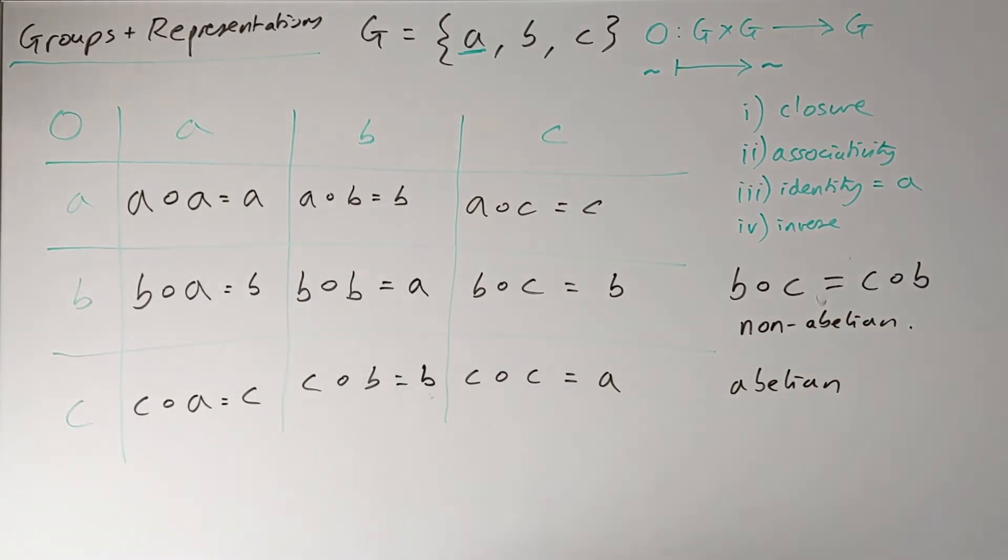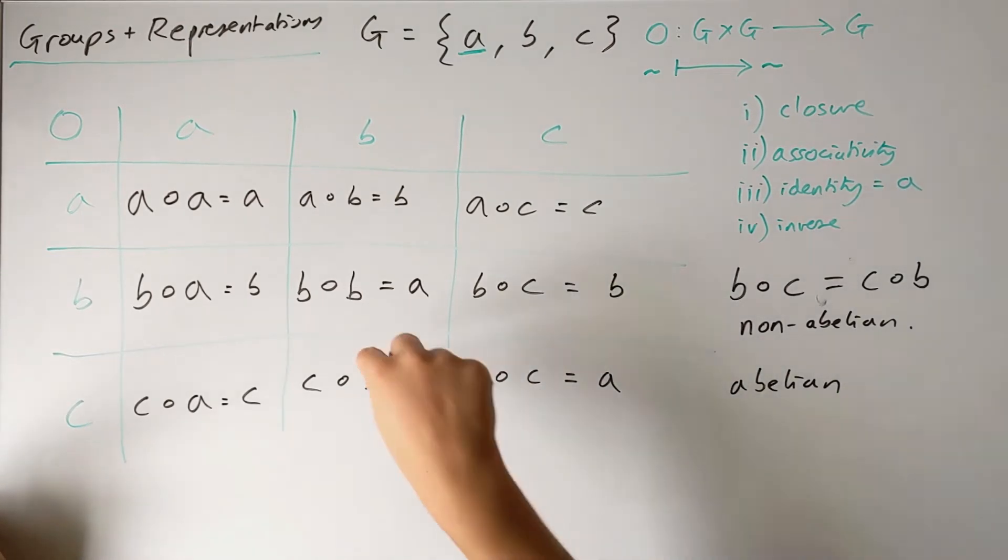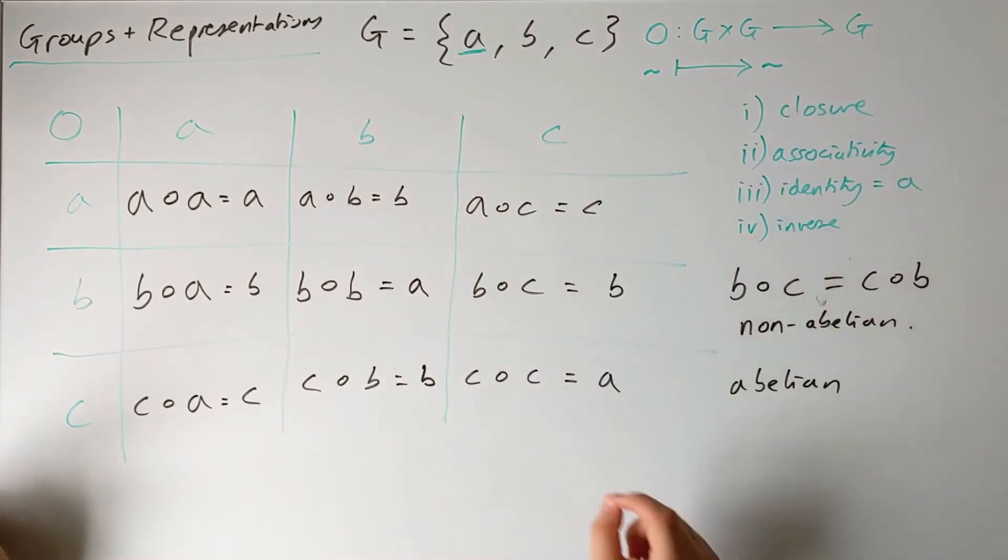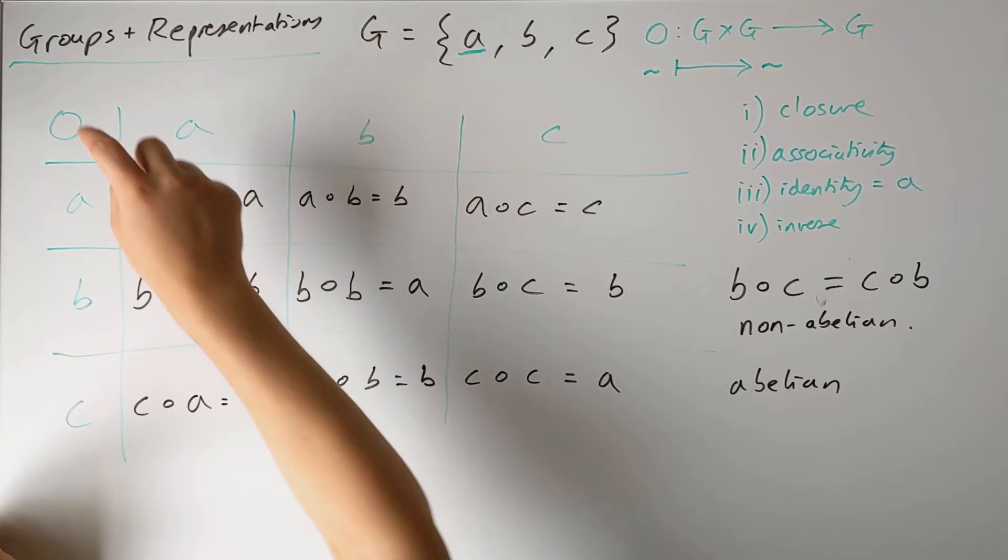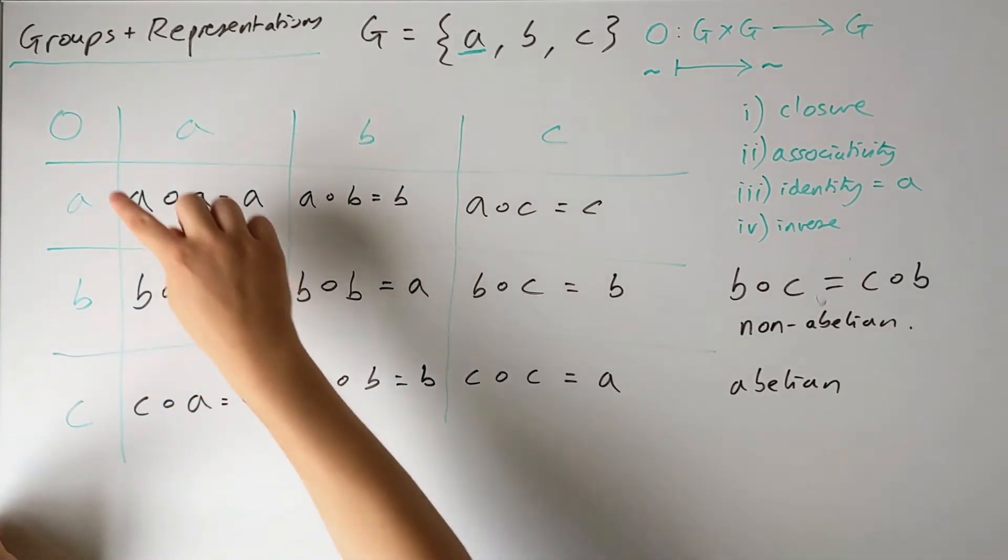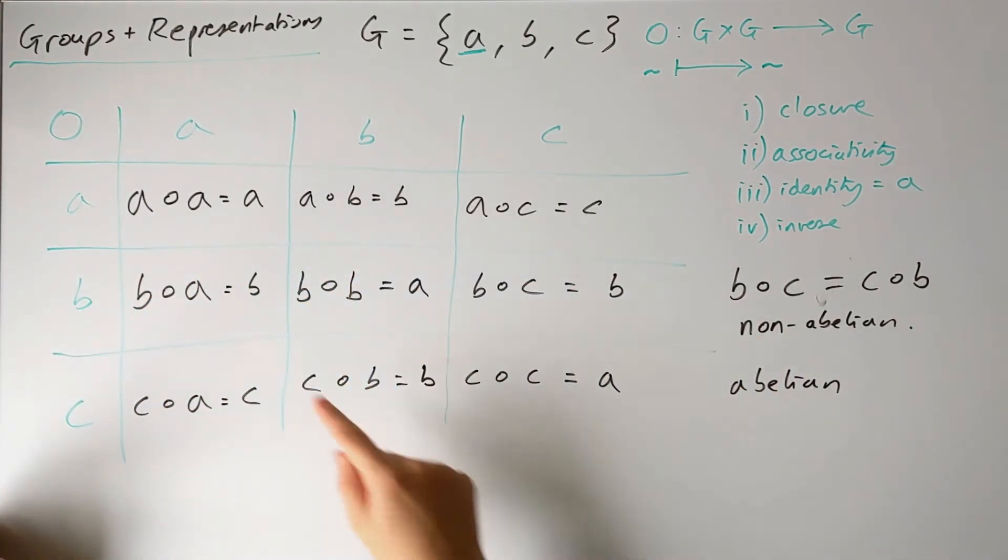So what we've succeeded in doing: we started with a set of just three elements, didn't say anything about what the elements are. I've simply constructed a composition map by writing down how it acts on all the elements, and I've been able to show that this composition map makes this set into a group because it satisfies all the axioms. Notice I haven't told you anything about what this composition operation actually is, just how it acts on each element.